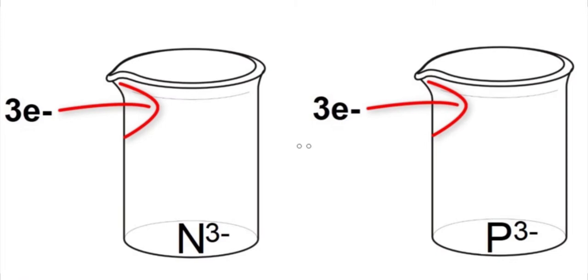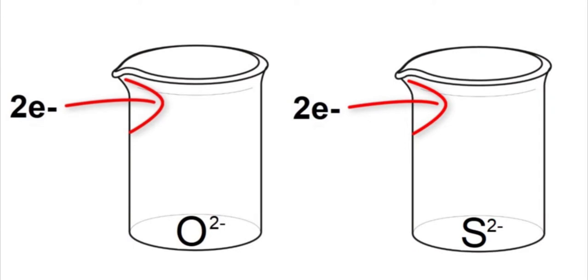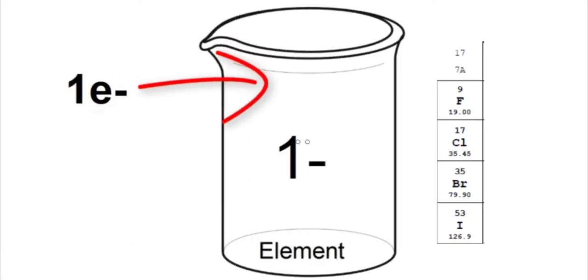Nitrogen and phosphorus will gain three electrons, resulting in a negative three charge. Oxygen and sulfur will gain two electrons, resulting in a negative two charge. Group 7a elements will gain one electron, resulting in a negative charge of one.